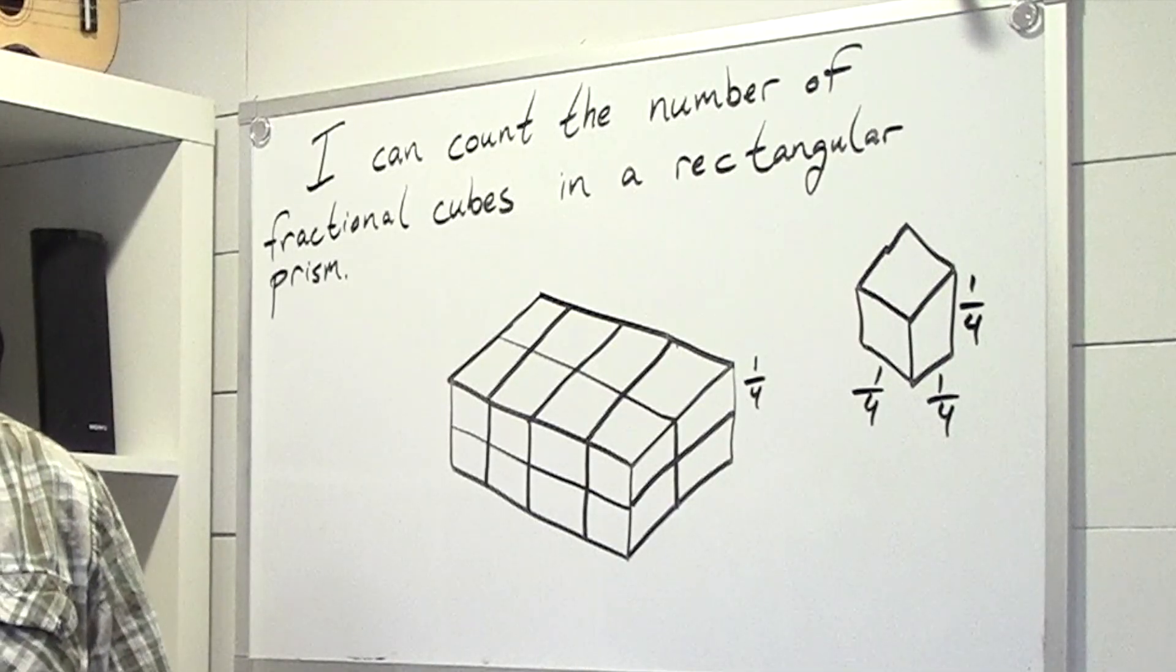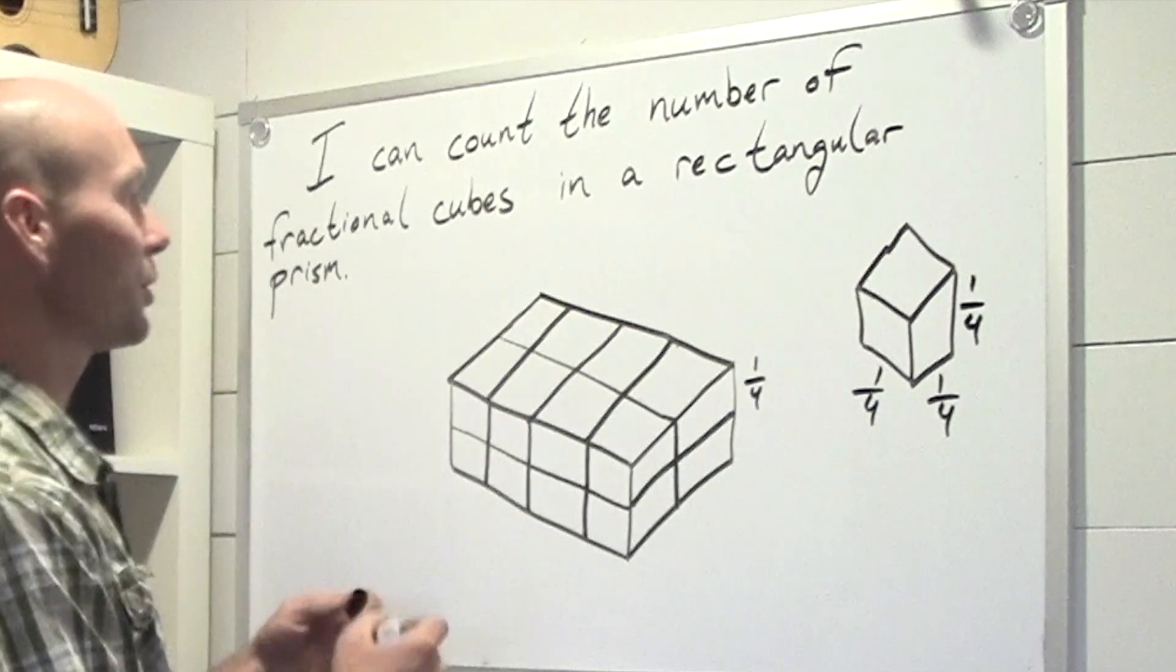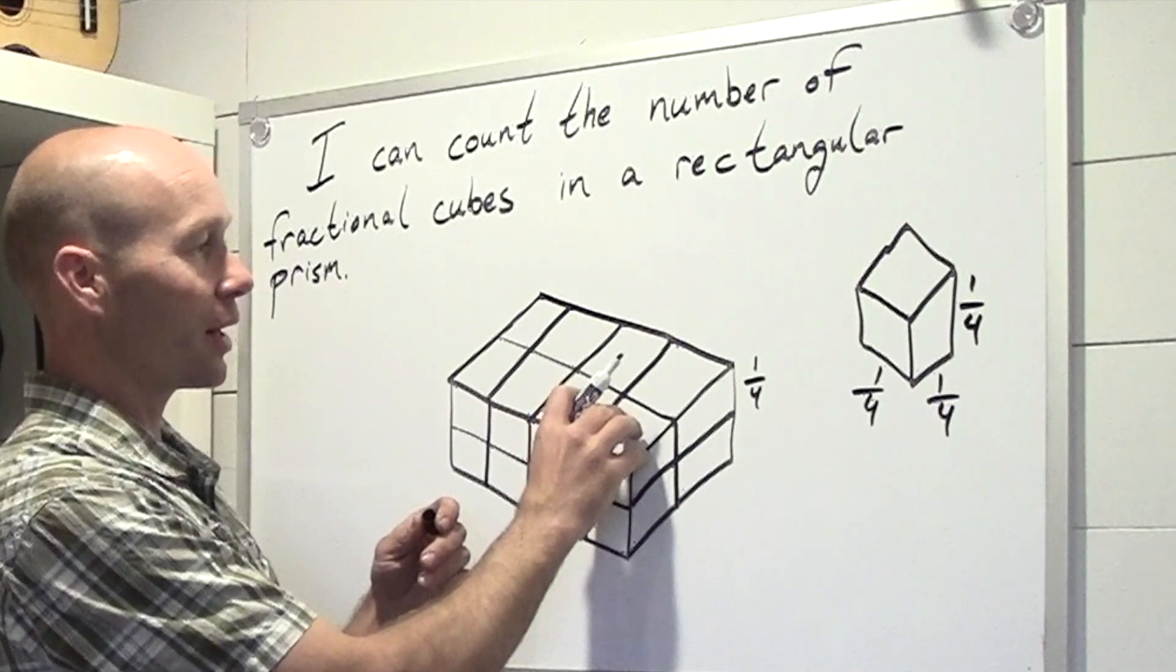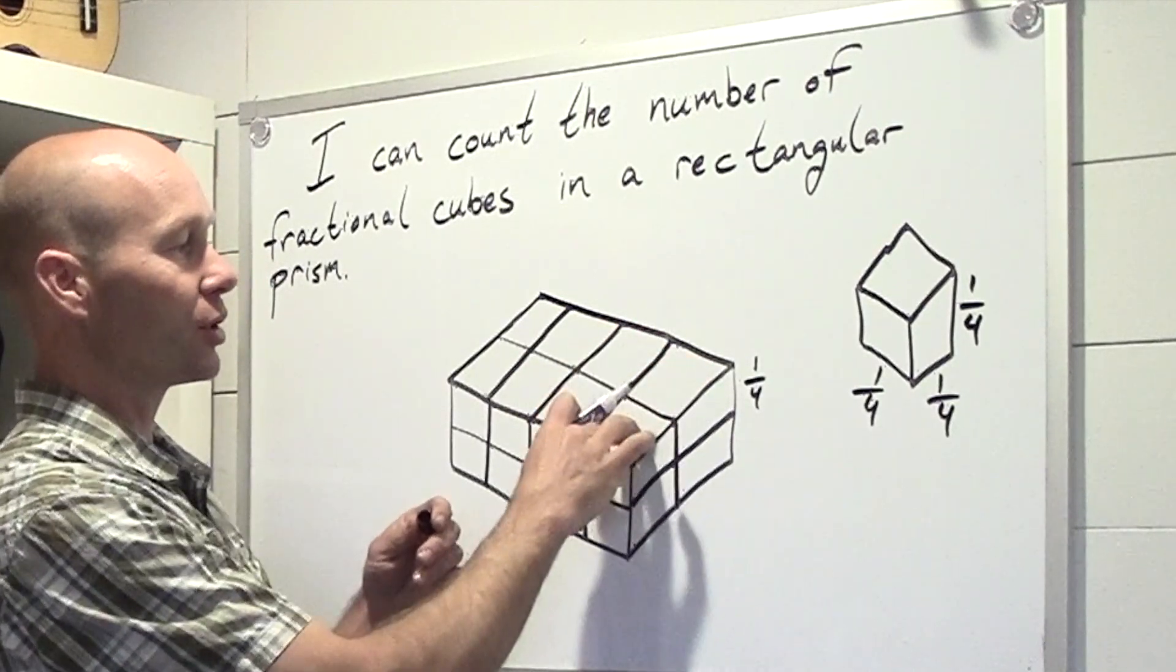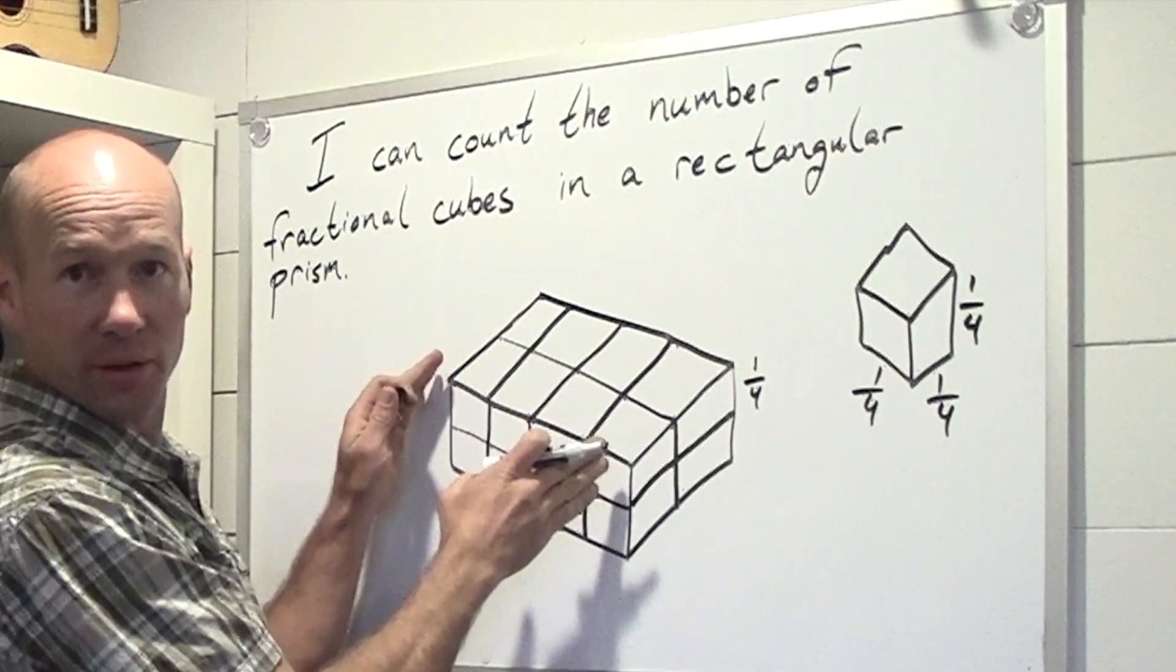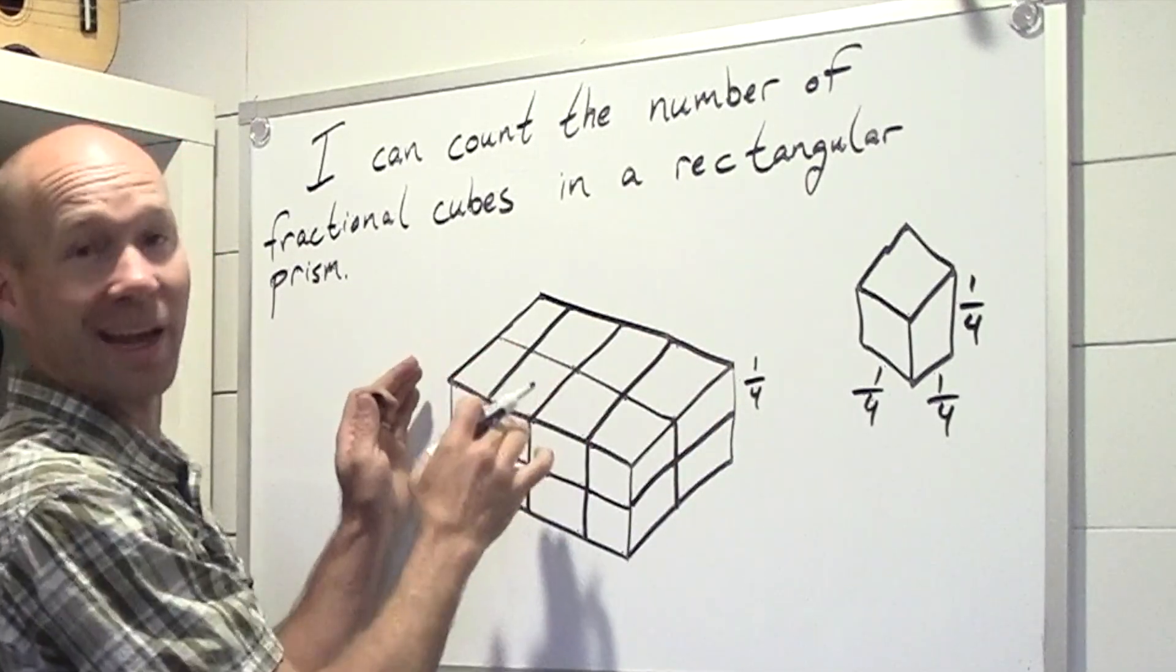All right, what did you come up with? That's right. So we have 1 right here, a second 1 right here. So we have 1, 2 on one side and we have 4 on the other side and 2 times 4 is 8.